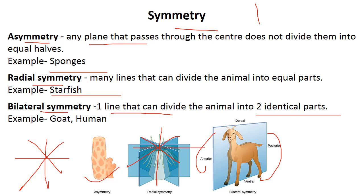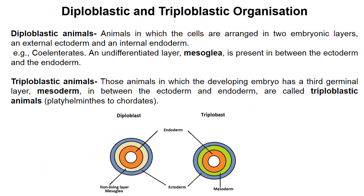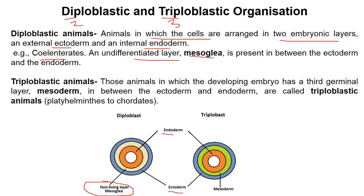All the higher invertebrates are generally bilaterally symmetrical. Then diploblastic or triploblastic organization — 'diplo' means two, 'triplo' means three. All living organisms have different layers. Diploblastic organisms have two layers: the ectoderm and the endoderm. Animals in which cells are arranged in two embryonic layers — one external ectoderm and one internal endoderm — are called diploblastic organisms, like Coelenterata. There is also an undifferentiated layer called mesoglea, present between the ectoderm and endoderm.